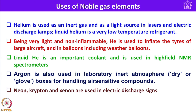Regarding the uses of noble gas elements: helium is used as an inert gas, as a light source in lasers and electric discharge lamps. Liquid helium is a very low-temperature refrigerant; being very light and non-flammable, helium is used to inflate the tires of large aircraft and in balloons including weather balloons. Liquid helium is an important coolant used in high-field NMR spectrometers. Argon is used for laboratory inert atmospheres or dry boxes for handling air-sensitive compounds. Neon, krypton and xenon are also used in electric discharge lamps.